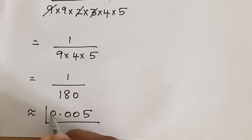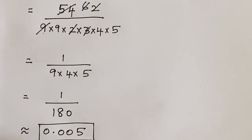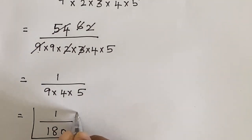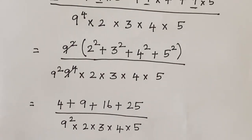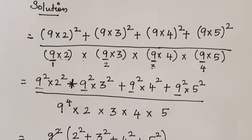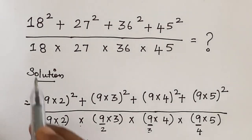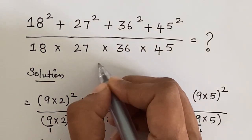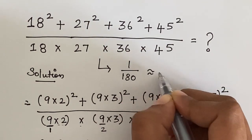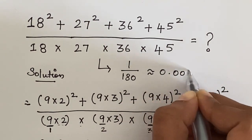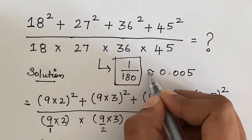So the solution for the above problem: the approximate value is 0.005. If you want the solution as a fraction, we can write it as 1 divided by 180. For the given problem we got the solution as 1/180, or approximately 0.005. If you like this video, please subscribe and thanks for watching.